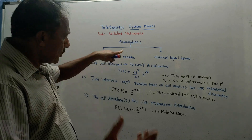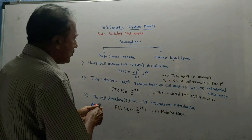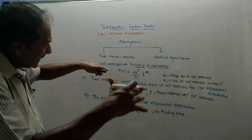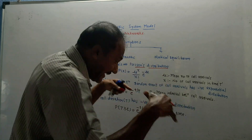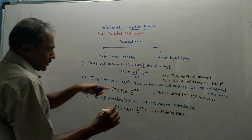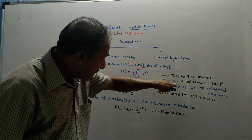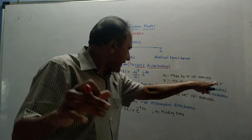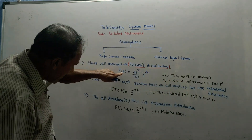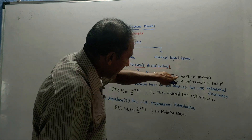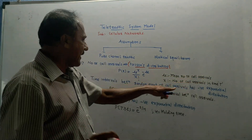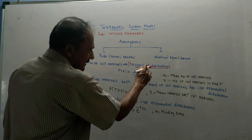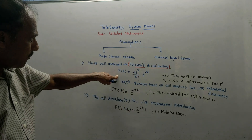Since call arrivals are random in nature, to analyze them completely, a formula called Poisson's distribution is used. For random events, Poisson's distribution formula is used. The formula is: probability of X, where X represents number of call arrivals in time T. Probability of X equals mu raised to X upon X factorial into e raised to minus mu, where mu means mean or average number of call arrivals. This is the equation of Poisson's distribution.